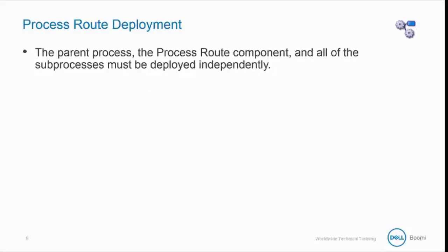Process route components and the subprocesses that they call are not dependent components of the parent process that calls them. The parent process, the process route component, and all of the subprocesses must be deployed independently. This independent deployment can be a benefit, but it can also be a challenge.